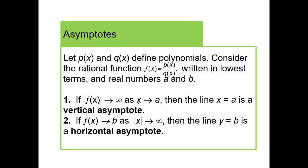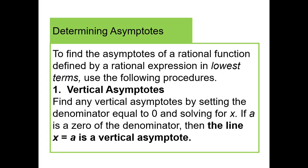Let p of x and q of x define polynomials. For the rational function f of x equals p of x divided by q of x: if f of x approaches infinity as x goes to a, then the line x equals a is a vertical asymptote; if f of x approaches b as x approaches infinity in absolute value, then y equals b is a horizontal asymptote. To find vertical asymptotes, set the denominator equal to zero and solve for x — if a is a zero of the denominator, then x equals a is a vertical asymptote.